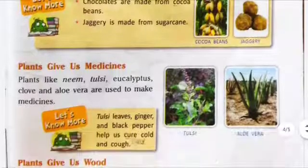Question 3: Name three plants whose leaves are eaten — spinach, cabbage, and lettuce. Write two examples of each: Cereals — rice and wheat. Pulses — pea and kidney beans. Question: Who provides food and shelter to animals? Plants provide food and shelter to animals.